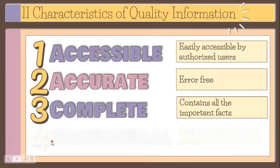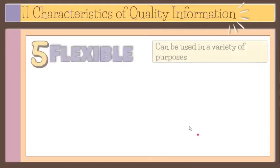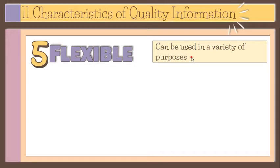Information should be relatively economical to produce; the value of the information should be balanced with the cost of producing it. Flexible information can be used for a variety of purposes. For example, information on what seats are left for airline passengers can be used by a customer, a sales representative, and an airline reservation website or application.